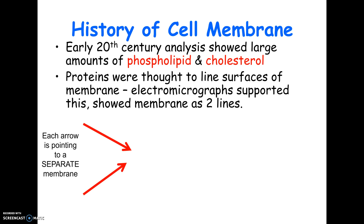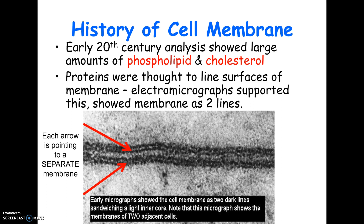They didn't understand how all this was put together. Looking at this electron micrograph, you're actually seeing two cell membranes. The black stains are the phosphate groups on the phospholipids, and the white in the middle is the fatty acids, with a gap in between and another set of phosphates and fatty acids. They couldn't see the proteins, so they thought proteins must be on the surface — but they were actually wrong. It's just the way the proteins are folded that prevented them from seeing them.